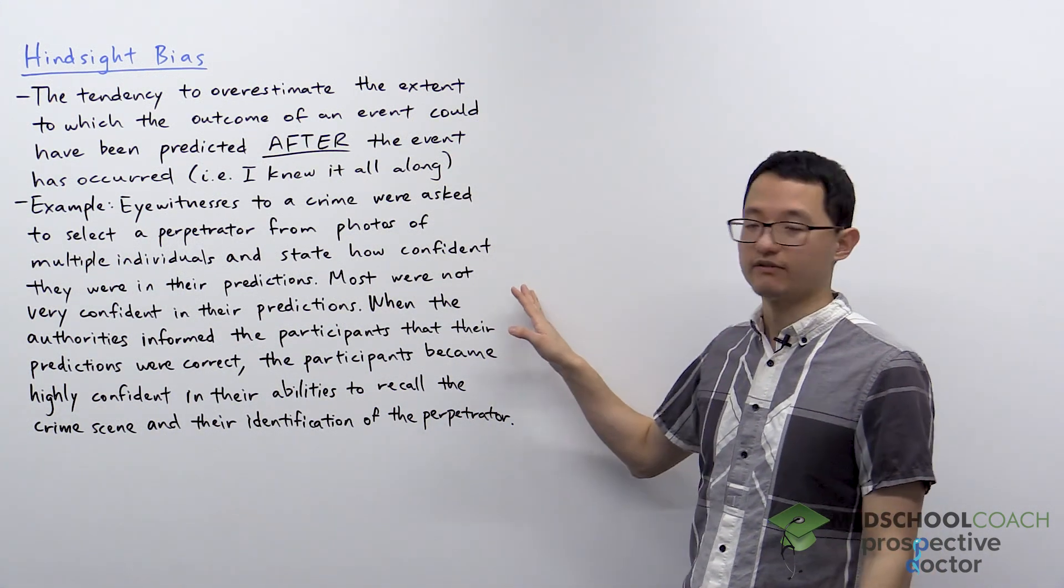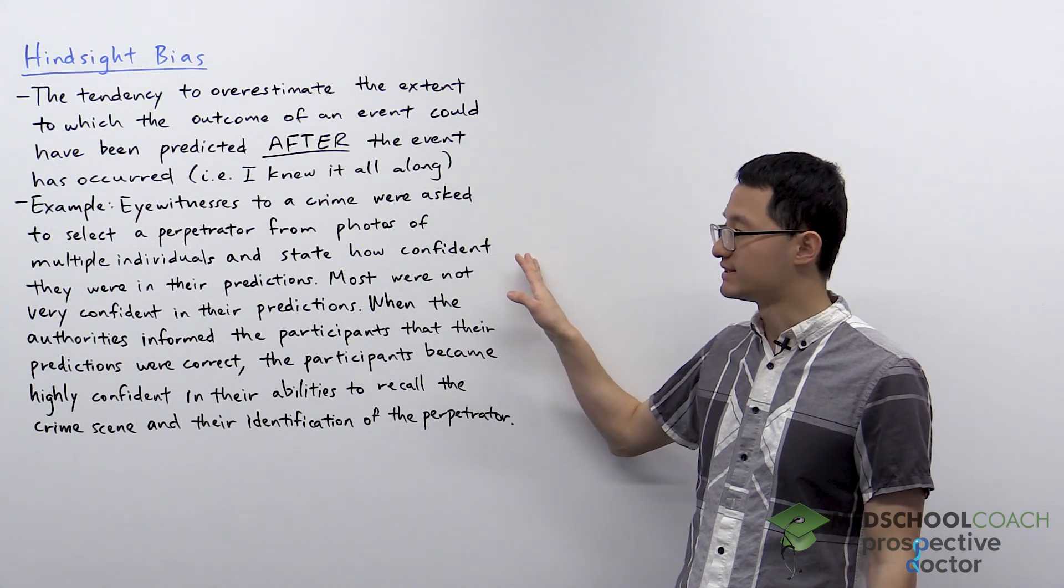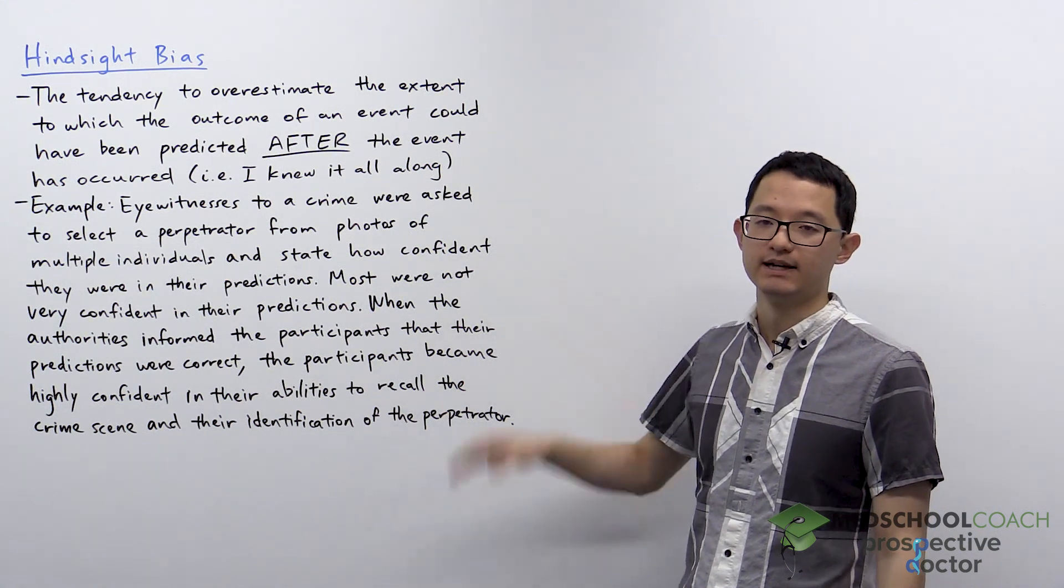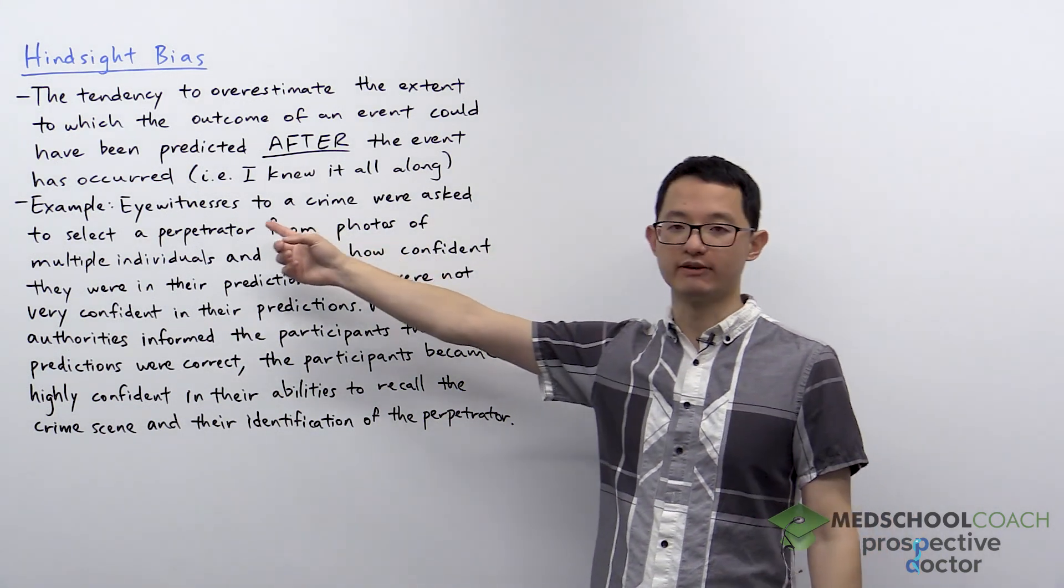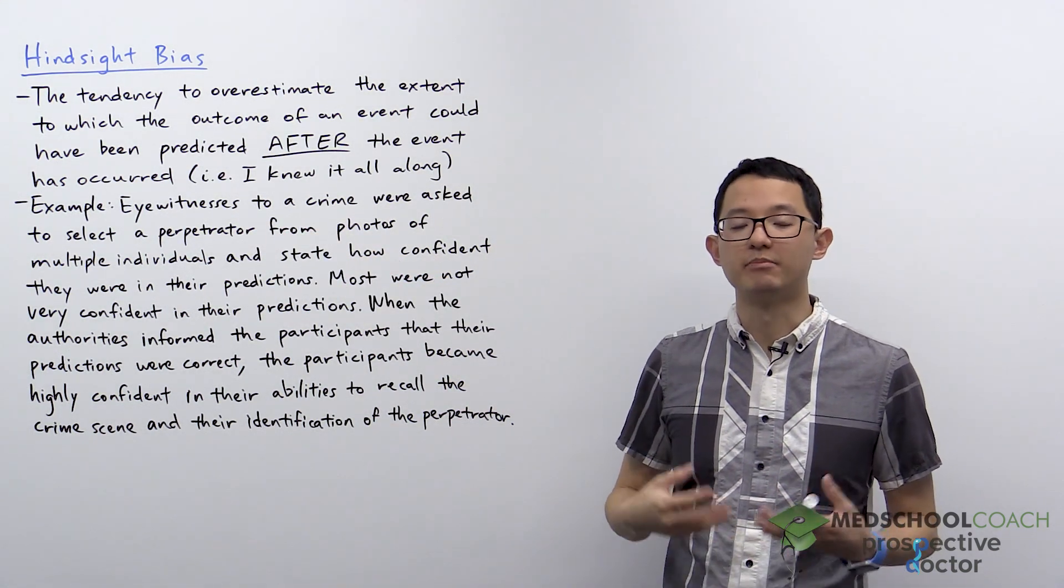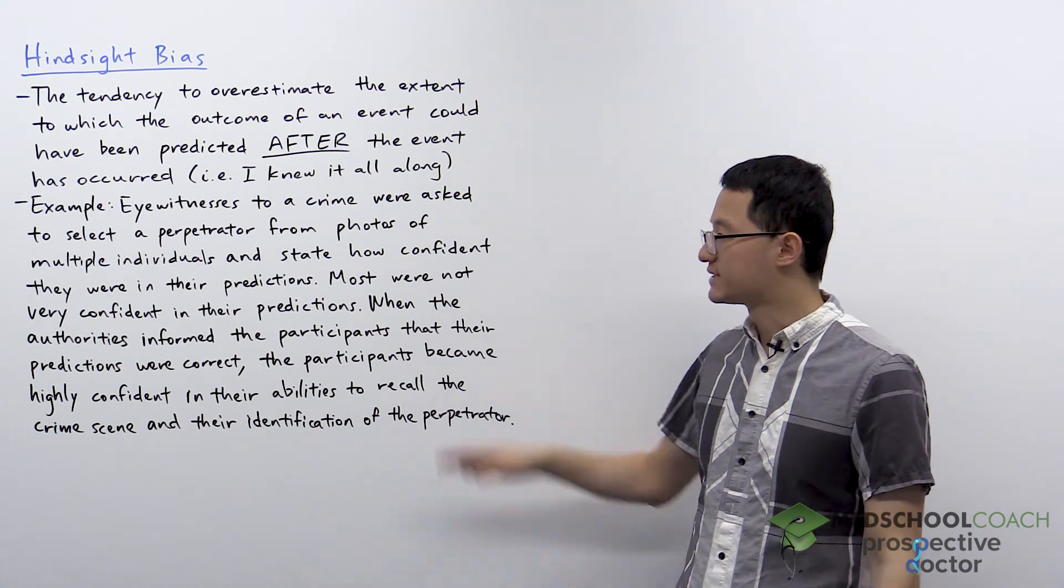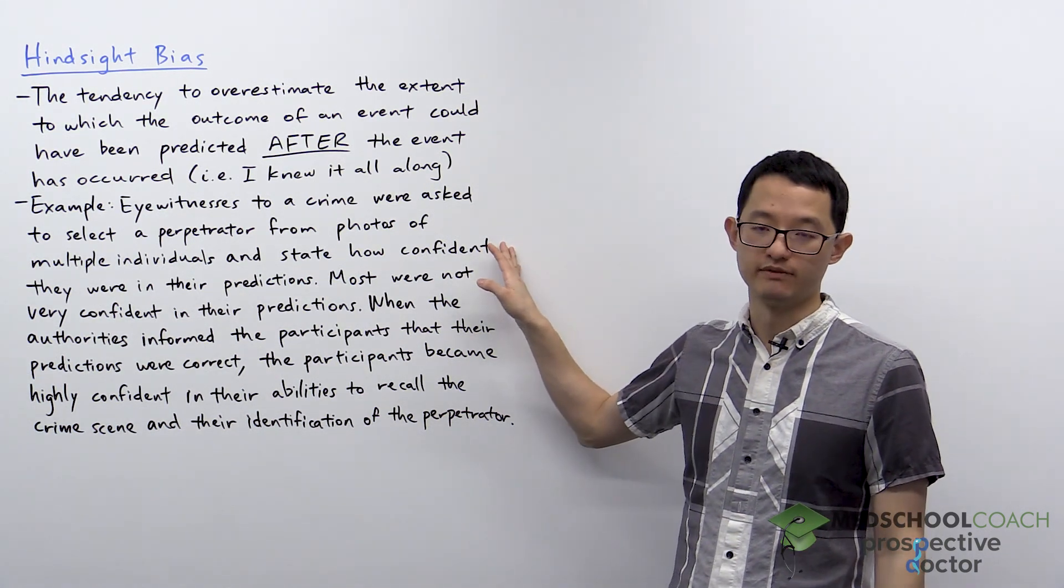One situation where this is often applied is to eyewitnesses to crime scenes. To illustrate how this works, you can consider several eyewitnesses that are asked to identify the perpetrator of a crime when presented with photos of multiple individuals.